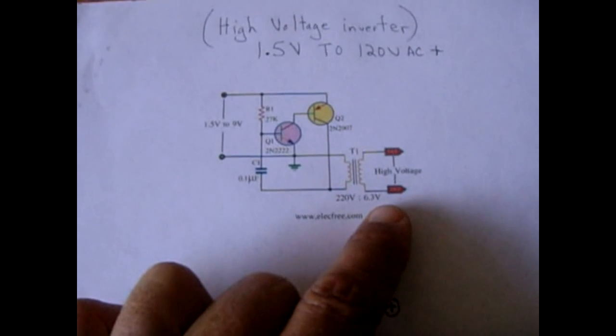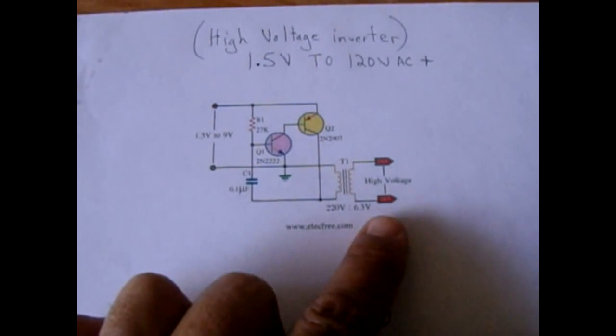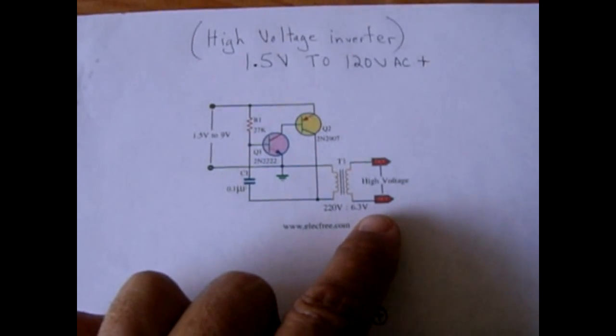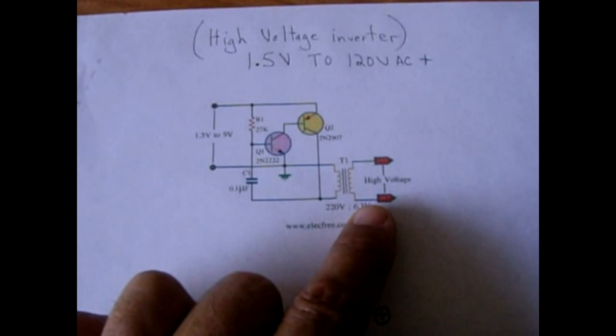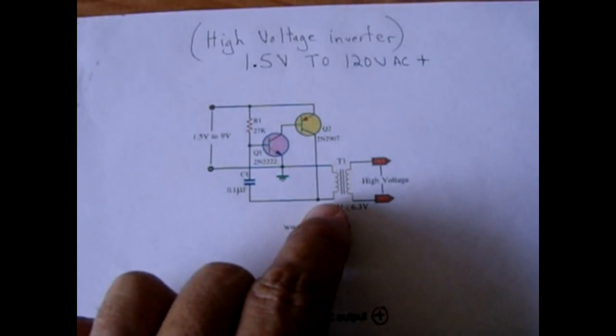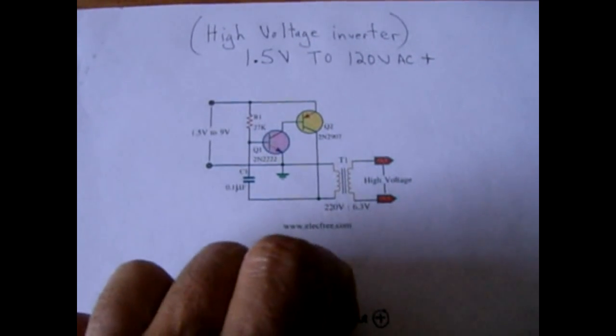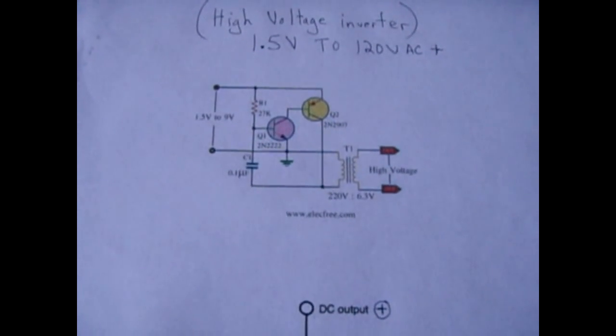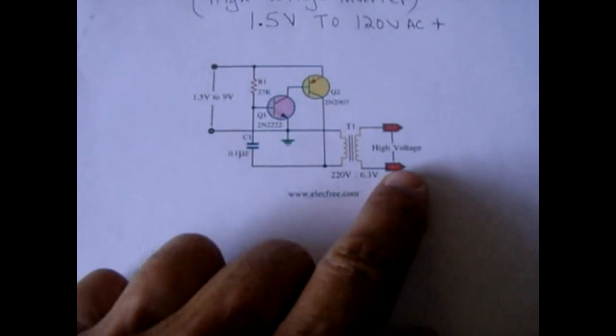Now the output voltage is dependent upon the ratio of the primary winding to the secondary winding. If you put a lot more secondary windings than you do on the primary, the voltage will be higher. So in this case I'm putting out roughly 120 volts just from a 1.5 volt battery.